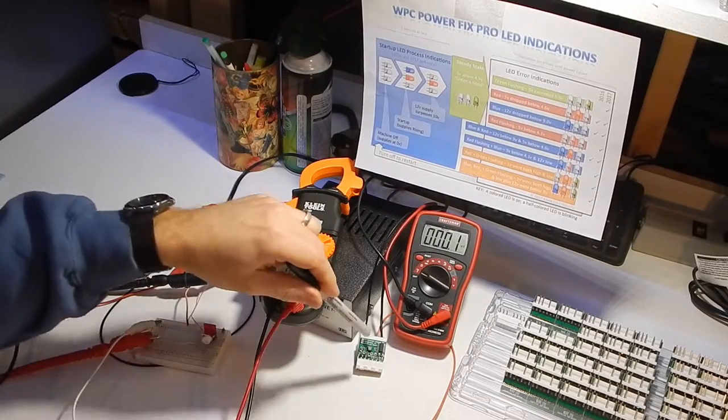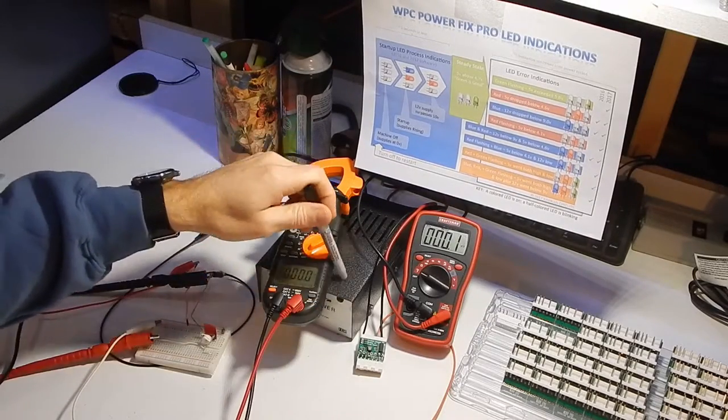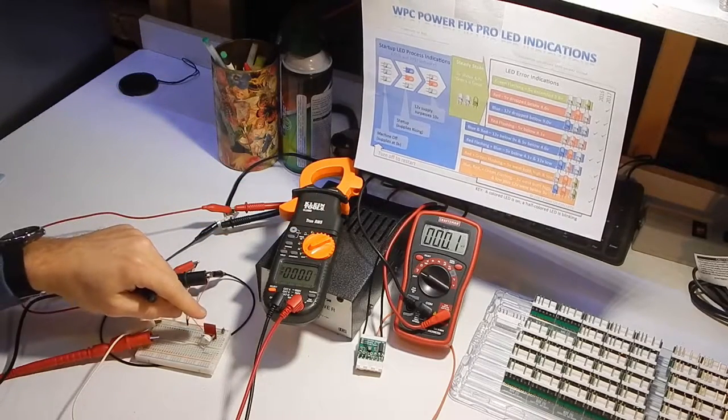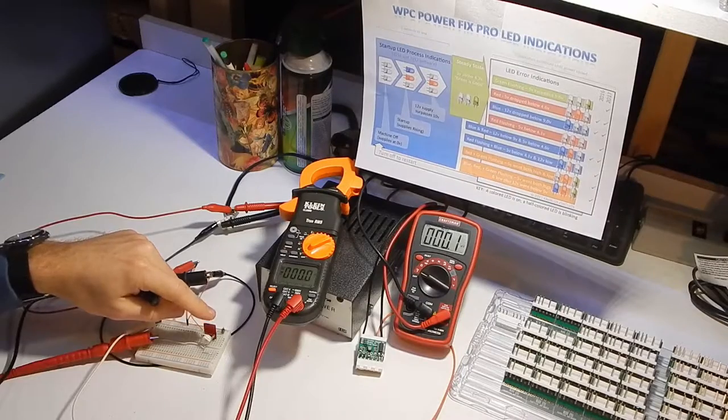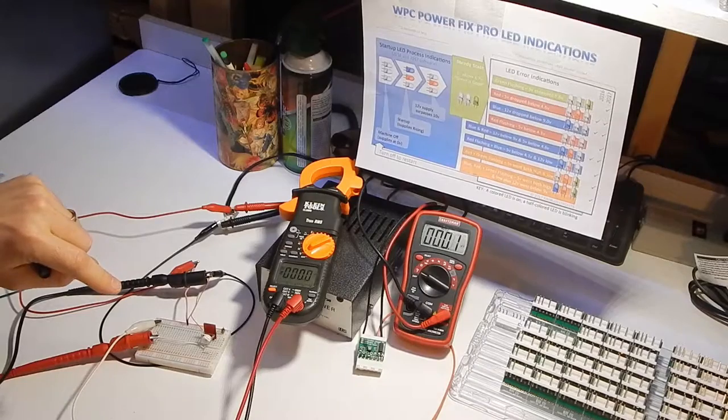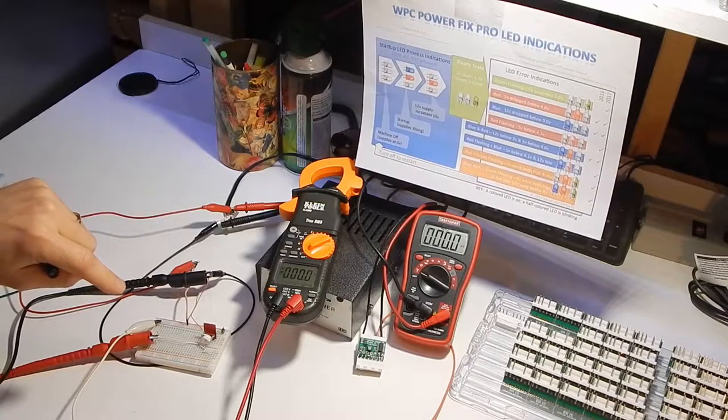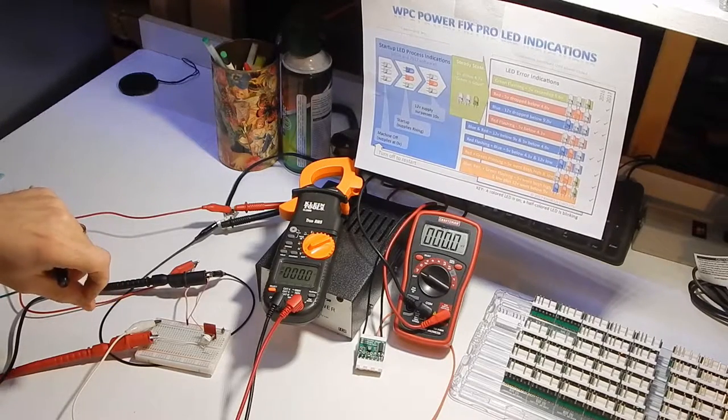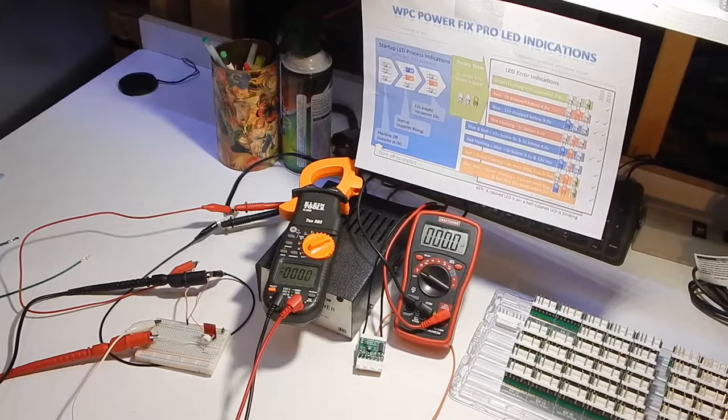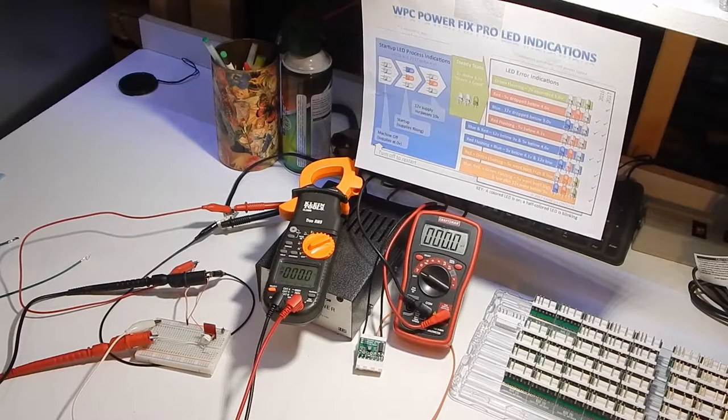I've got a daughterboard here connected to a simple 12-volt power supply. Next, I have a variable regulator hooked up to the sensing pin on that daughterboard, and that will allow us to control what the daughterboard sensor sees so that we can step through the error indications. Since we're already in the first state, let's start.